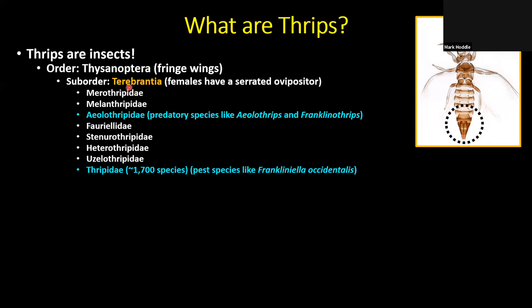In an avocado orchard you're likely to see two families quite commonly. The Aeolothripidae includes predatory species like Aeolothrips and Franklinothrips — ant-mimicking species that are quite important predators of avocado thrips. Then the family Thripidae includes Scirtothrips perseae — avocado thrips — and other pest species like Frankliniella occidentalis, the Western Flower Thrips, which is native to California.